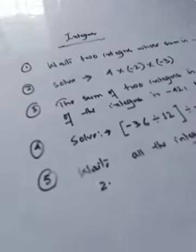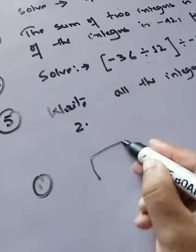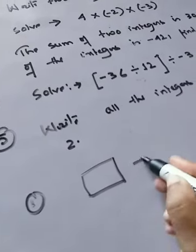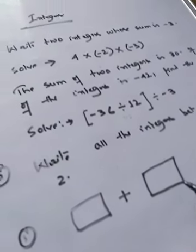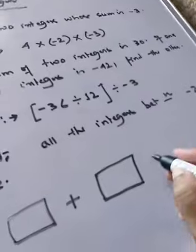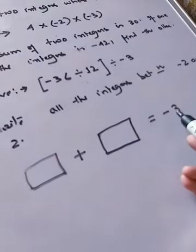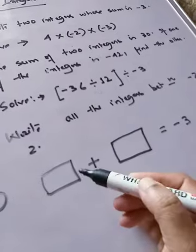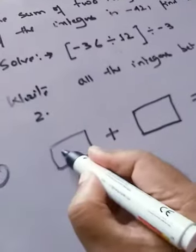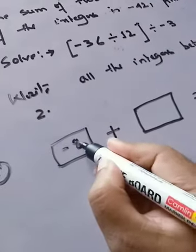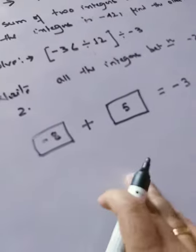Let's begin with question number one: write two integers whose sum is minus three. These are very easy sums. You have to write two integers whose sum is minus three, meaning the answer should come out as minus, so the bigger number should possess a minus sign.